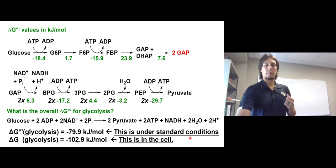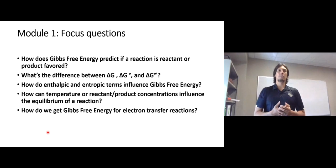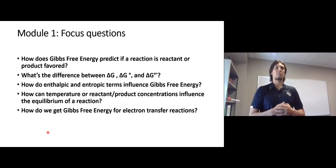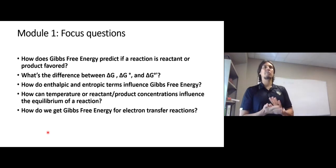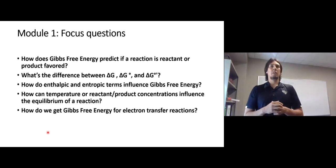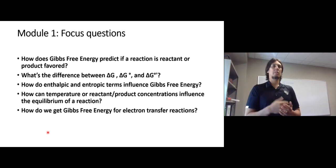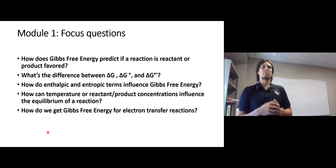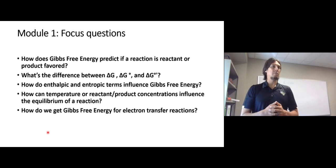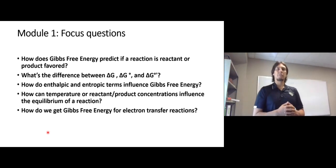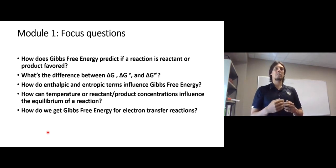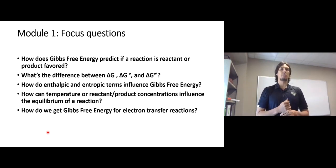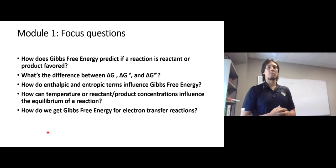As you look at the videos going forward in module one, try to think about these questions: How does Gibbs free energy predict if a reaction is reactant or product favored? What's the difference between delta G, delta G naught, and delta G naught prime? How do enthalpic and entropic terms influence Gibbs free energy? How can temperature or reactant and product concentrations influence the equilibrium of a reaction? And how do we get Gibbs free energy for electron transfer reactions?